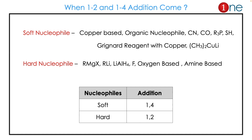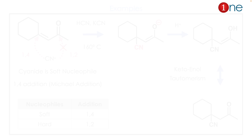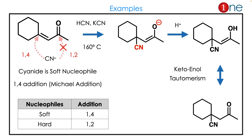You might have the question: when does 1,4 or 1,2-addition occur? Soft nucleophiles — which are copper-based organo-nucleophiles, cyanide, carbon, phosphorus, and sulfur-based — will undergo 1,4-addition. Hard nucleophiles — which are magnesium-based, lithium-based, aluminium, fluorine, oxygen, and amine-based — undergo 1,2-addition. So basically, hard nucleophiles undergo 1,2 and soft nucleophiles undergo 1,4.